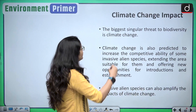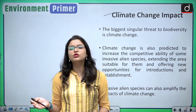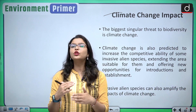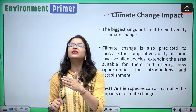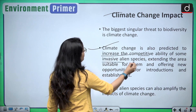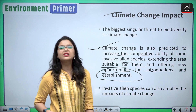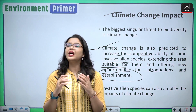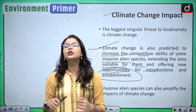Climate change is the biggest singular threat to global biodiversity. Global warming also increases the risk from invasive alien species — they start reproducing quickly due to the impact of global warming, cutting food supply and oxygen in water bodies, threatening both plants and humans. Climate change is also predicted to increase the competitive ability of some invasive alien species, extending the areas suitable for them and offering new opportunities for their introduction and establishment.